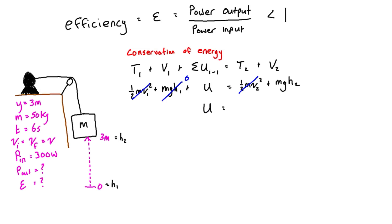We can see that the work done is just going to equal mgh2, which is 1471.5 joules. So that's the actual output of work this machine is doing. You can even put a subscript 'out' if it helps you remember.